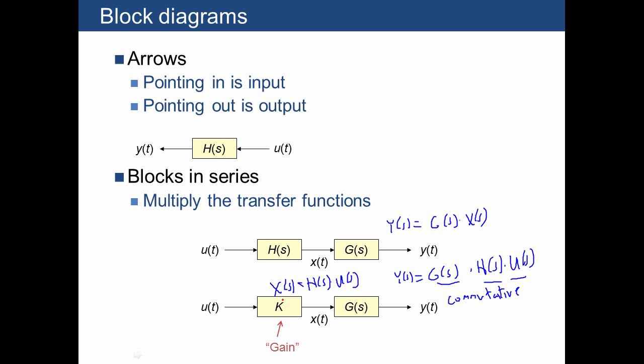A term that we use when the transfer function is just a constant is we just call that a gain, meaning that we multiply whatever the input is by some number and make it bigger or smaller.